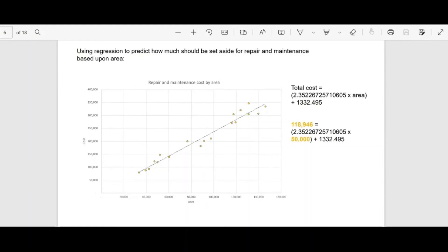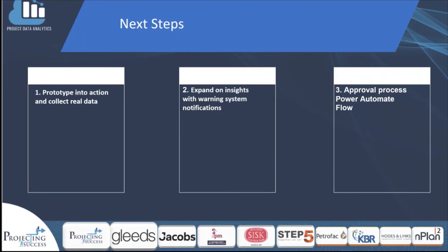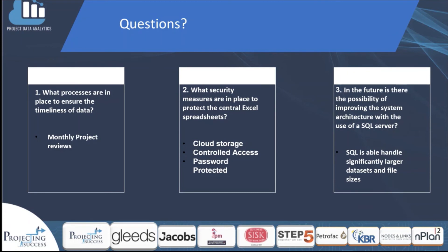All of these insights will help improve understanding and management of the budget, and enhancements to the solution will be made through prototyping in the real world and collecting real data. We will also expand the insights with warning system notifications set up when projects are going over budget, and set up notification systems through Power Automate for when monthly updates are due and when projects have been updated by team members. In terms of security, cloud storage solutions such as OneDrive will be utilized with controlled access to members of the Gleads organization only, and where required, worksheets will be password protected. For future improvements, the Power App will be linked to an SQL server, which will greatly benefit the efficient retrieval and accessing of data.